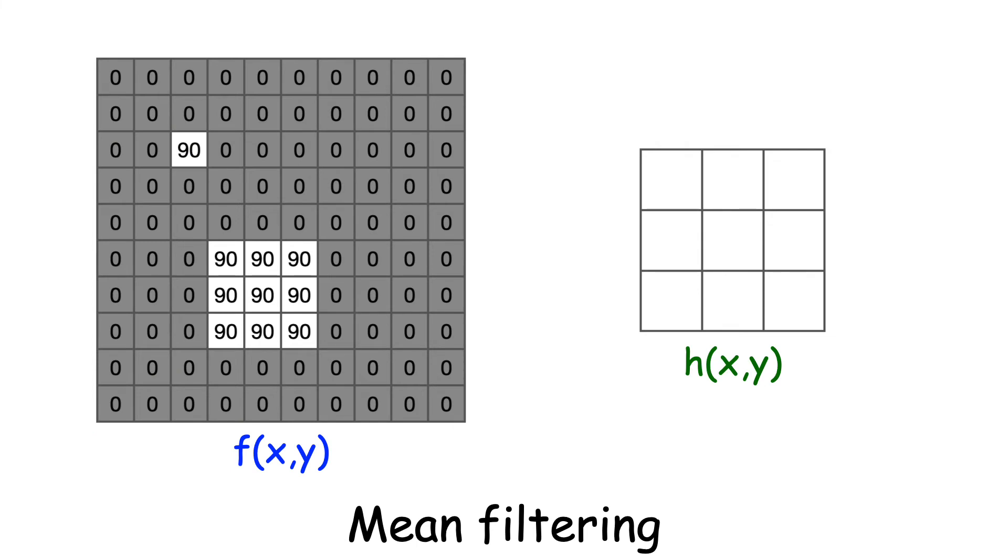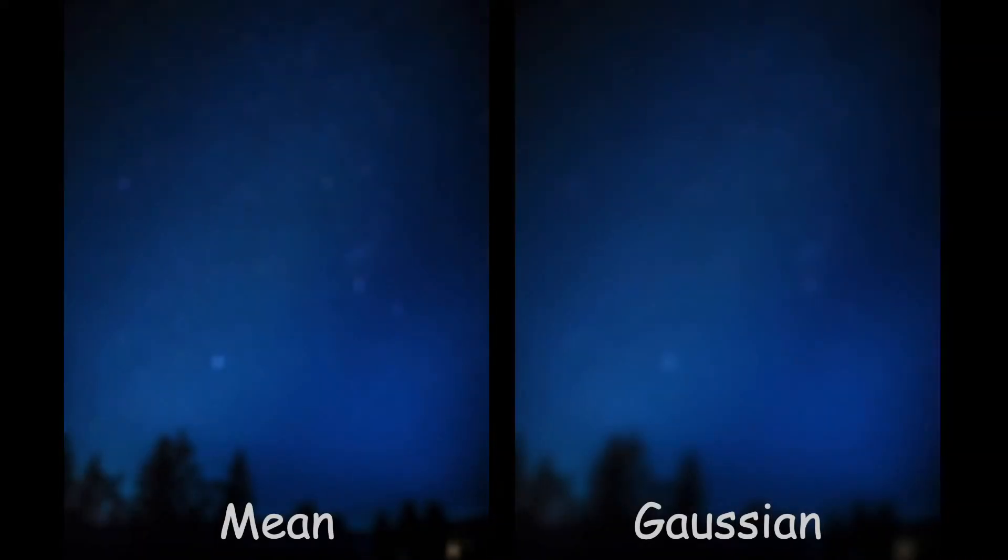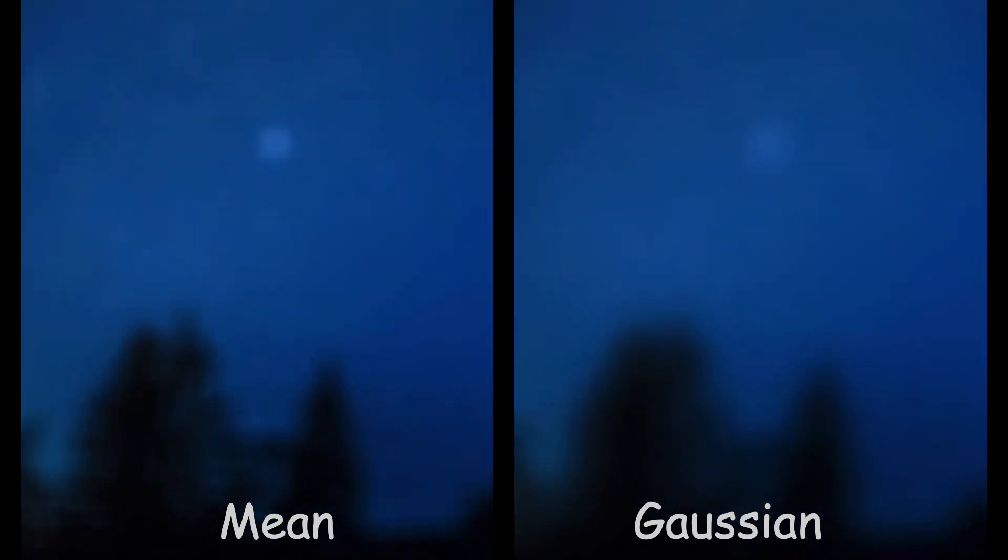So what's the convolution kernel for mean filtering? Well, we're applying the same weight to each pixel, and don't forget to divide by 9. We can also do weighted averages. This kernel gives more weight to the center pixel. It approximates a Gaussian function. It does a much better job blurring stars, and just about everything else. They don't look like squares anymore.